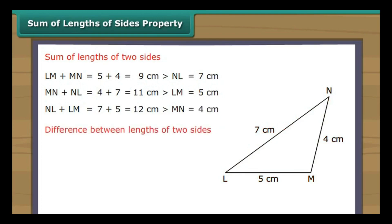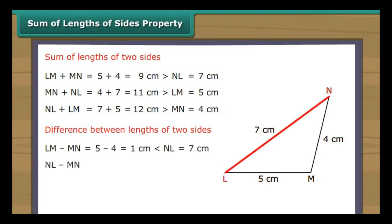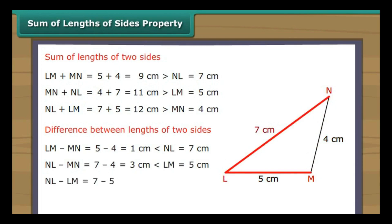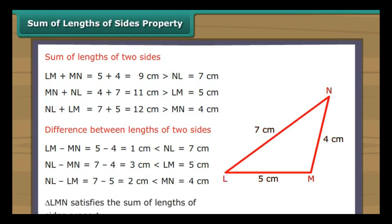Now for the differences: LM minus MN equals 1 cm, which is smaller than NL (7 cm). NL minus MN equals 3 cm, which is smaller than LM (5 cm). NL minus LM equals 2 cm, which is smaller than MN (4 cm). Triangle LMN satisfies the sum of lengths of sides property.